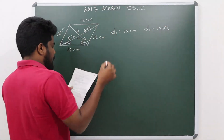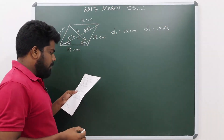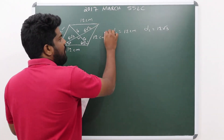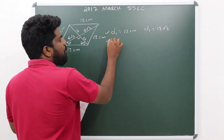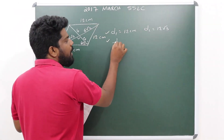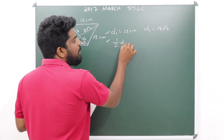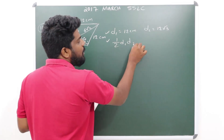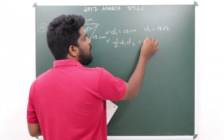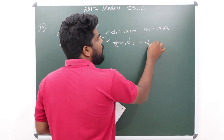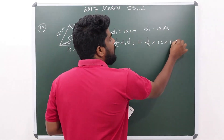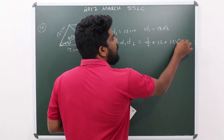Now I will show you how to find the area of the rhombus. The area of the rhombus is given by the formula: Area = ½ × D1 × D2, where D1 and D2 are the lengths of the two diagonals.